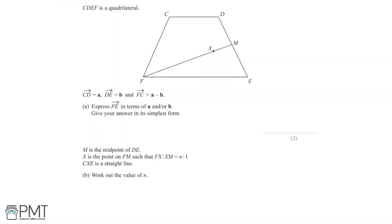In this question, CDEF is a quadrilateral. The vector CD is equal to a, the vector DE is equal to b, and the vector FC is equal to a minus b. In part A, we need to express the vector FE in terms of a and/or b, giving our answer in its simplest form.